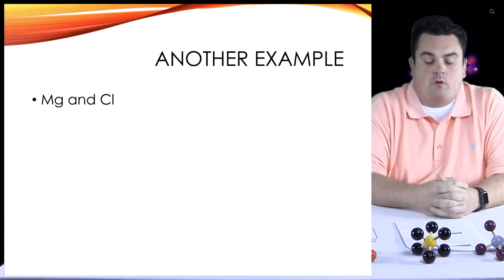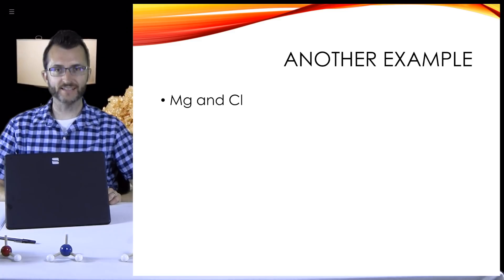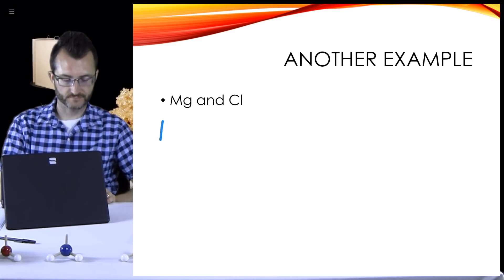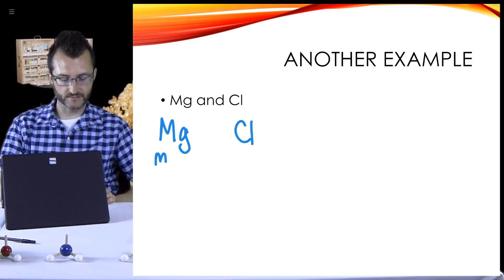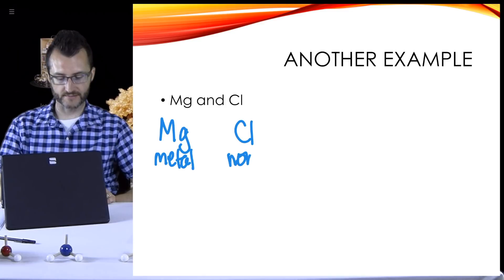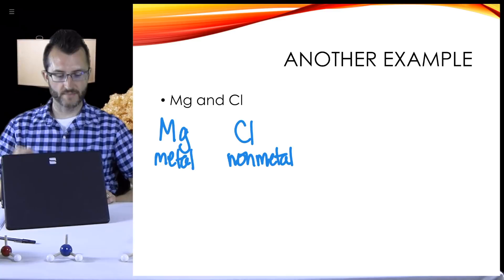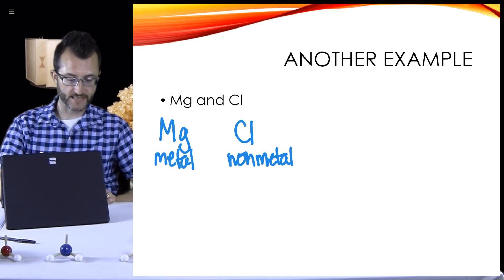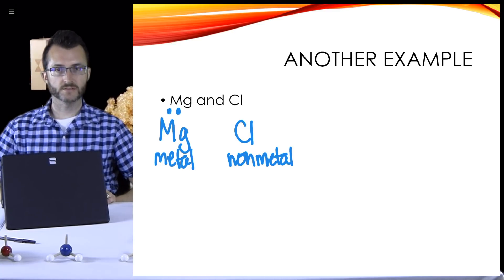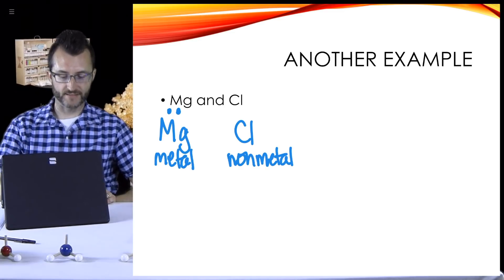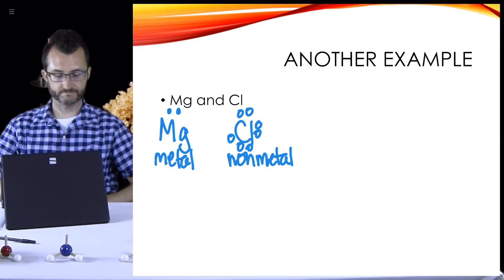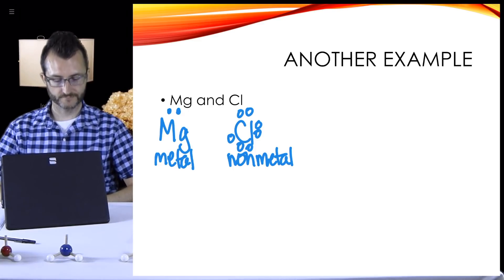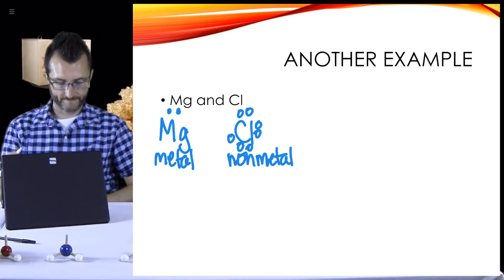All right, we're going to do one more example here. We've got Mg and Cl. What type of elements do we have? Mg is a metal and Cl is a non-metal. How many valence electrons does Mg have? Mg is in group two, so it's got two. And chlorine being in group 17 has how many? Seven.